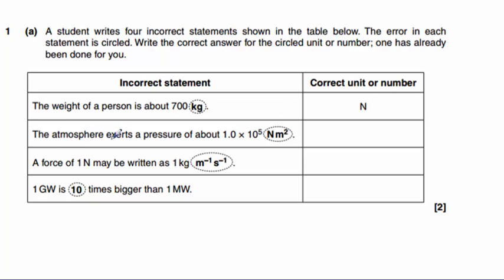The second one here, the atmosphere exerts a pressure of about 1 times 10 to the power of 5 newton meters squared. Well, the equation for pressure is pressure equals force divided by area. So that's newtons per meter squared.